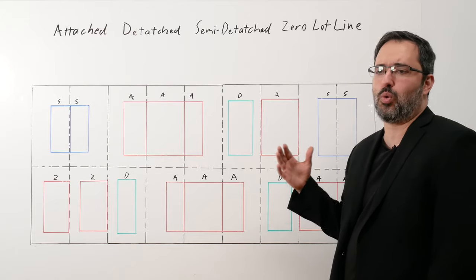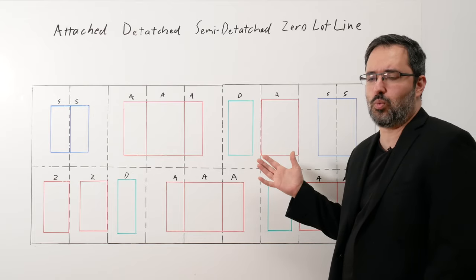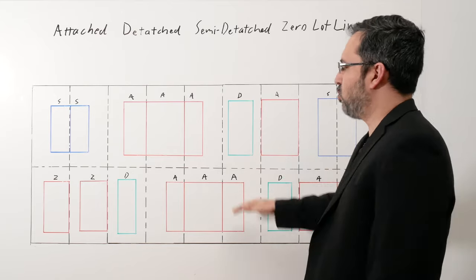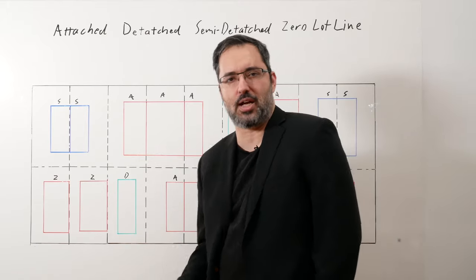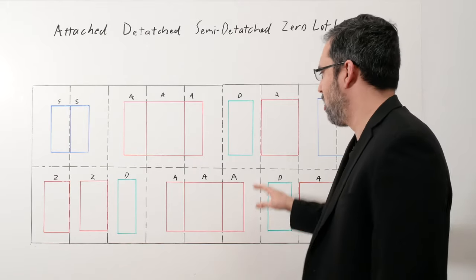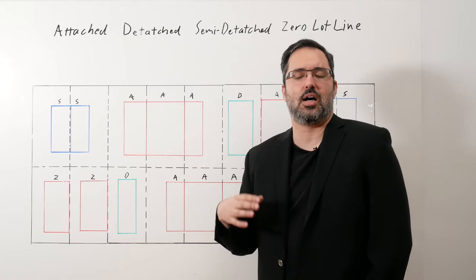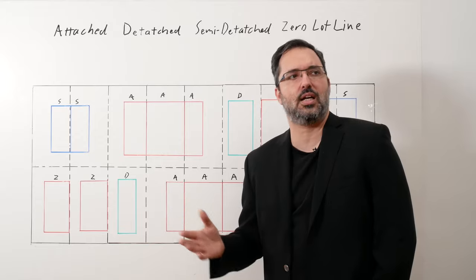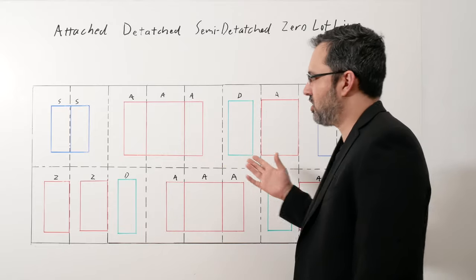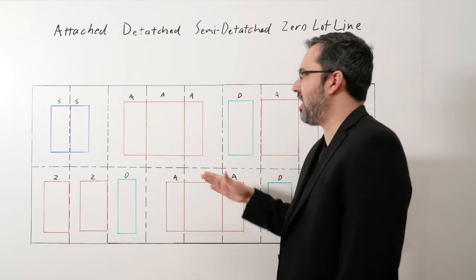Depending on what zoning district you're in, the codes will vary based on certain rules that apply to attached, certain rules that apply to semi-detached. Can you attach to an existing building? It's going to depend what zoning you're in. In New York City, it's going to vary.